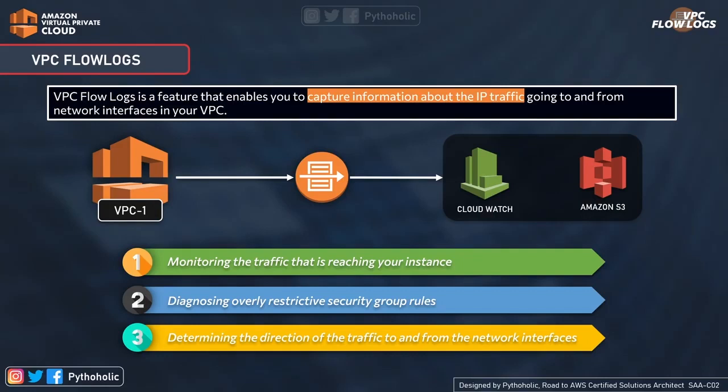The third benefit is determining the direction of the traffic to and from the network interfaces. When you see the log formats for VPC flow logs, they contain information about the source and target instances or services that the logs are being sent to or received from, and that can also help you with debugging.